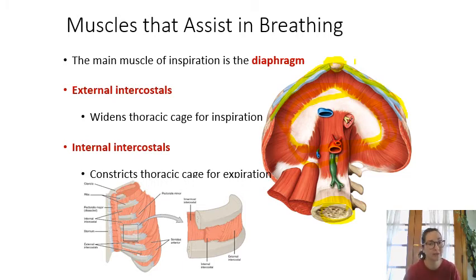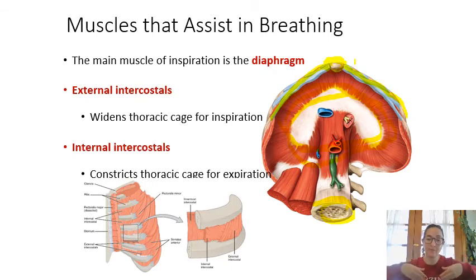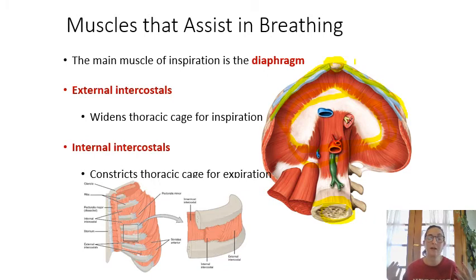External intercostals run between each rib, and when they contract they pull the ribs upward, making more room in the thoracic cavity so you can breathe in. Internal intercostals do the opposite — they pull the ribs downward, which helps you exhale.